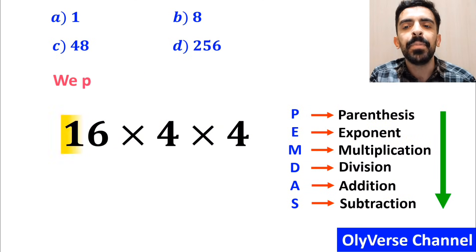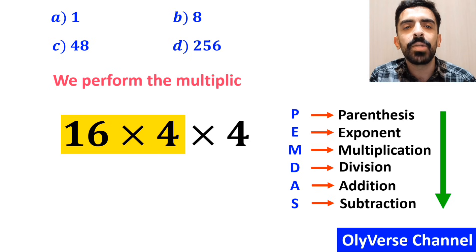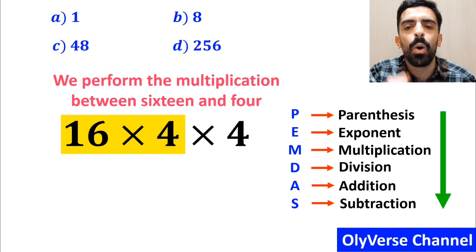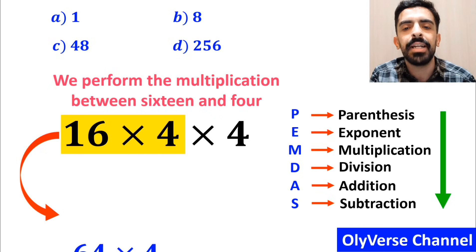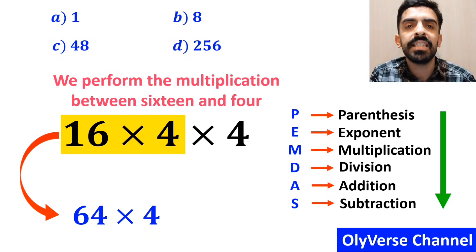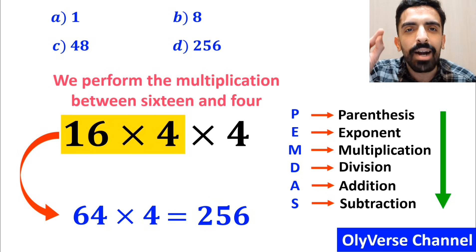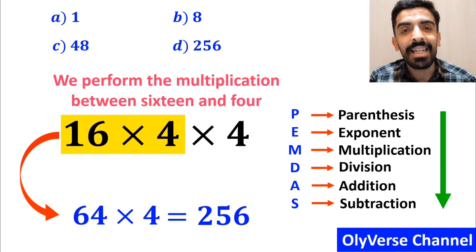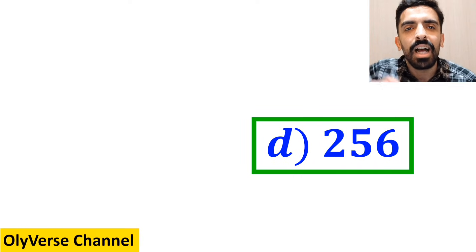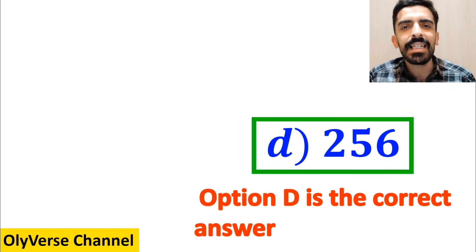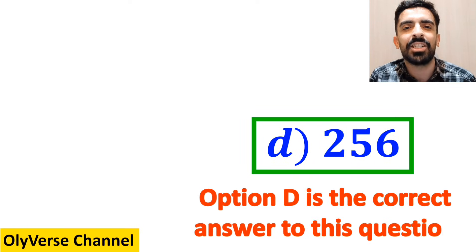In the final step we perform the multiplication between 16 and 4, giving us 64 times 4, which finally gives us the answer 256. Option D is the correct answer to this question.